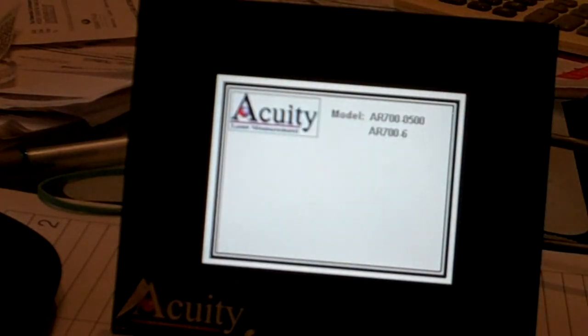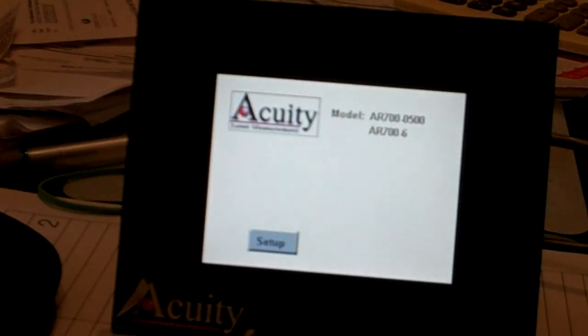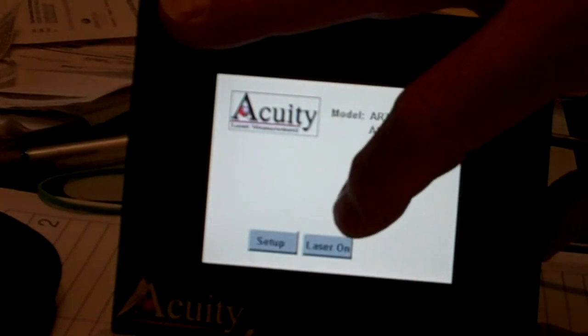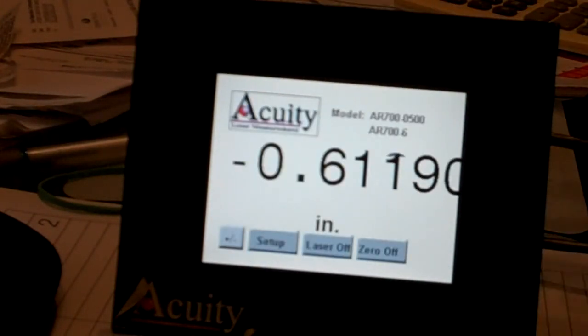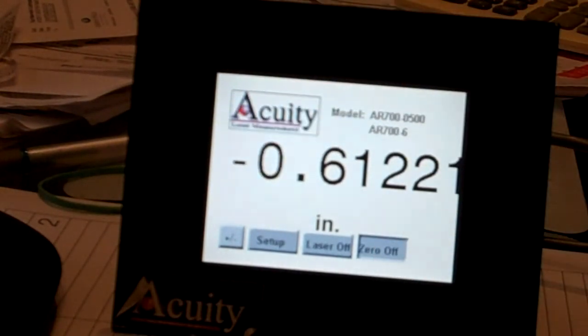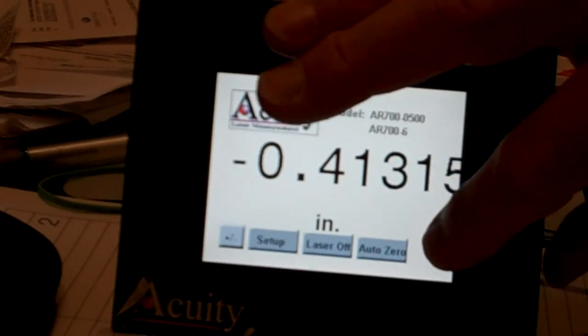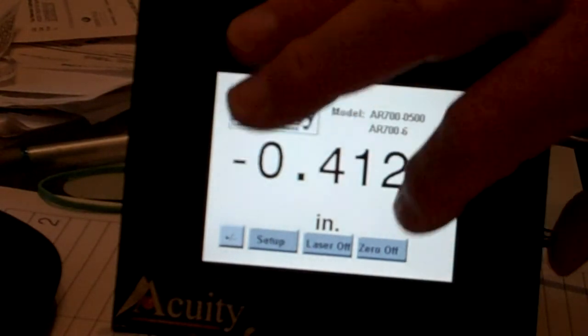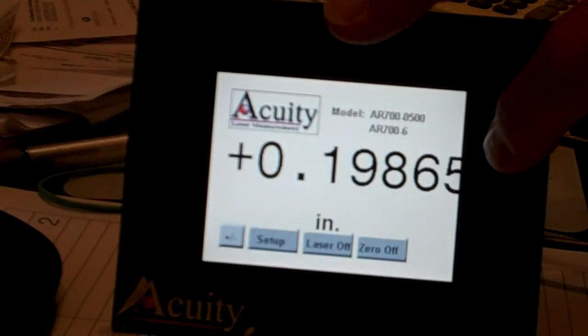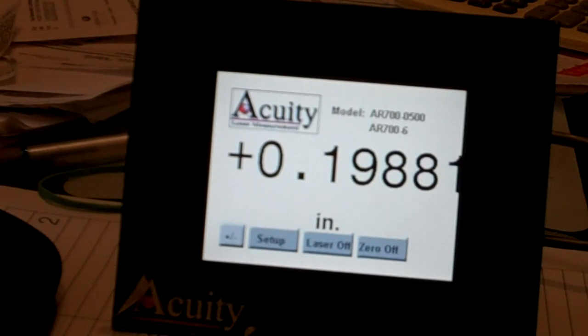And we're going to save that. And so now what we're going to do is this offset automatically adds in that number. So now that we've plugged that in and I'm going to zero it.